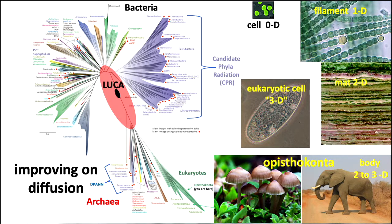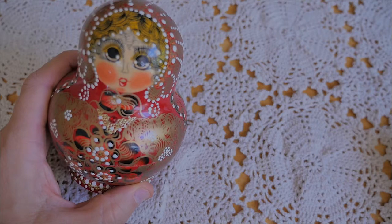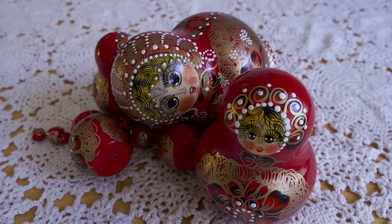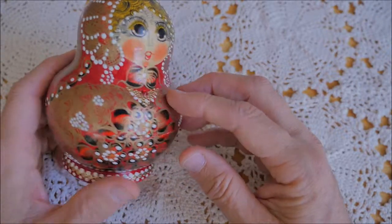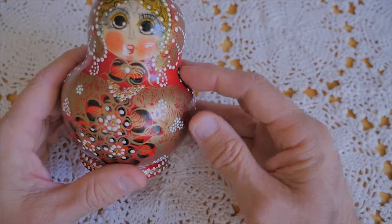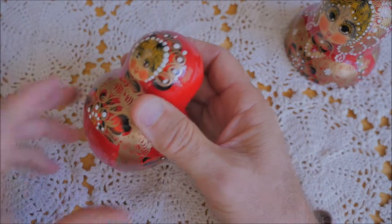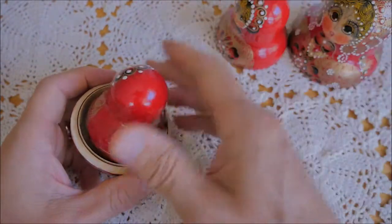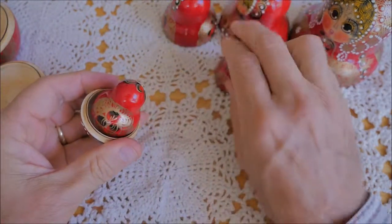Maybe a planet with extraterrestrials will be like Earth — with unicellular and multicellular life, with colonies of thousands, millions, billions, and even hundreds of trillions of cells like our bodies. At the same time, maybe each of those cells will be like a matryoshka doll, with endosymbionts cooperating with secondary endosymbionts — cells within cells within cells.